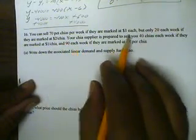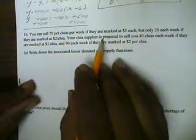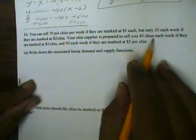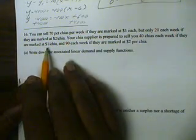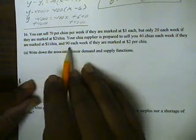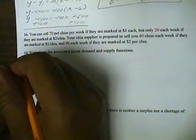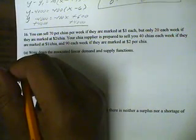You can sell 70 pet chias per week if they're marked for $1, but only 20 per week if they're marked for $2. Your supplier is prepared to sell you about 40 chias per week if they're marked for $1, but 90 per week if you sell them for $2. And we're trying to find the associated linear demand and supply function.